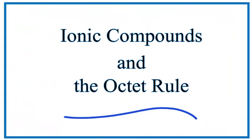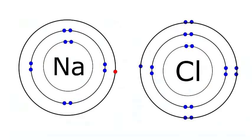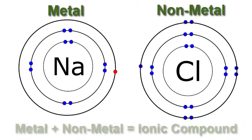For ionic compounds, it's a little bit different. Here we have a sodium and a chlorine atom. The sodium's a metal, and the chlorine's a nonmetal. That means it's going to be an ionic compound. Ionic compounds don't share valence electrons. They transfer them.